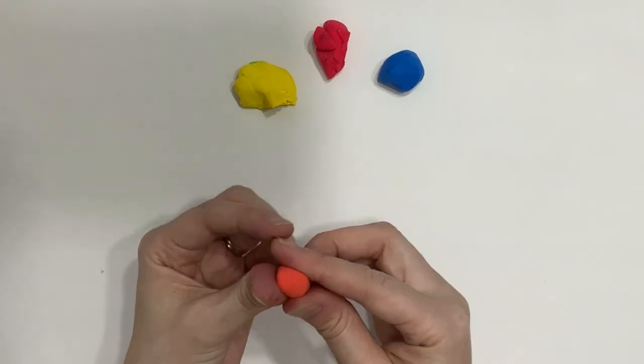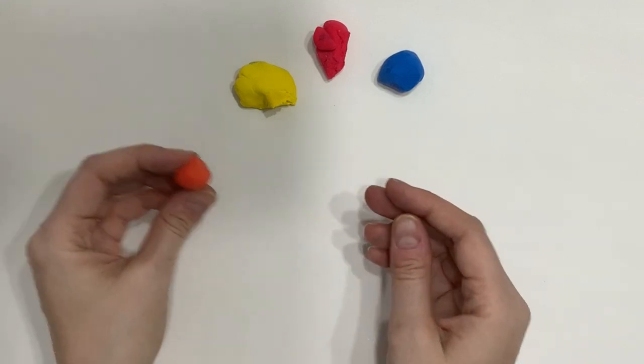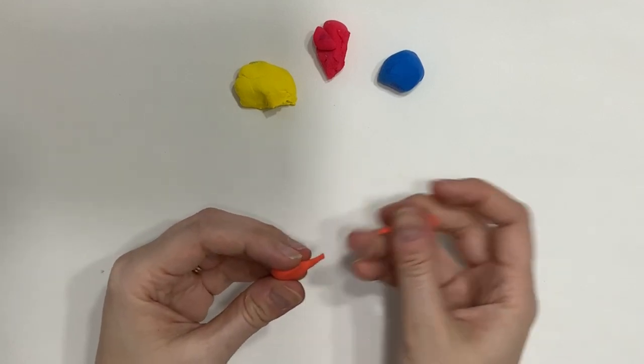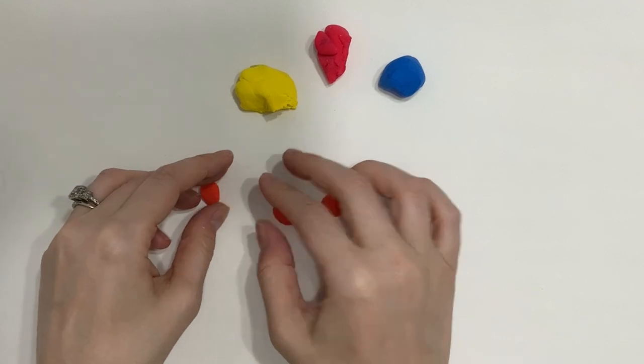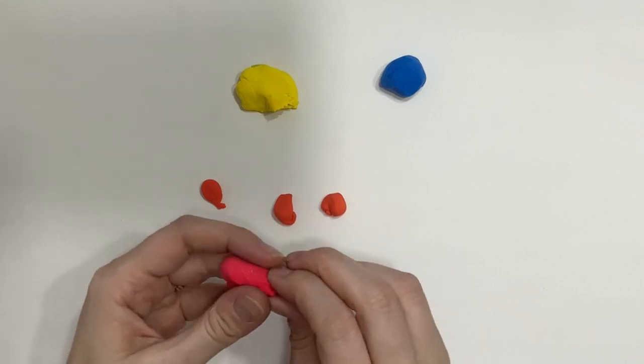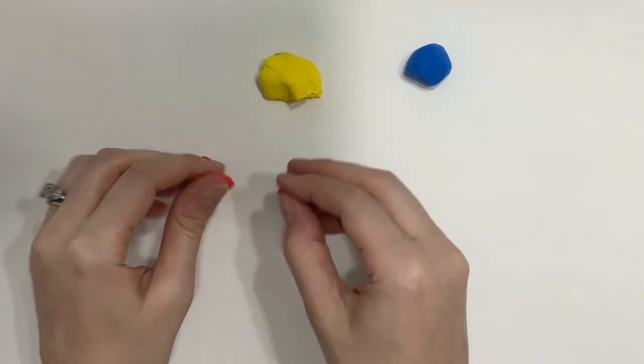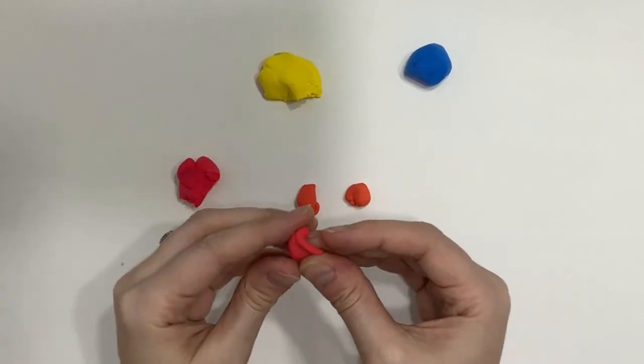When we mix a primary and secondary color, we will get what's called tertiary or intermediate colors. So for example, I'm going to divide my orange into three separate pieces. Now I'm going to make my first tertiary or intermediate color by taking a little bit of red and mixing it back into my orange. Remember, orange is made of red and yellow. If we use a little bit more red, it's called red orange.